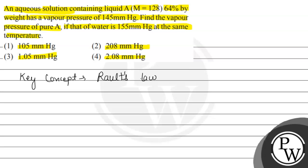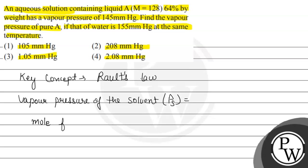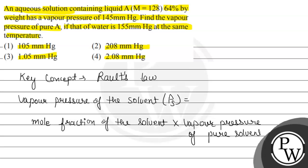Let us see what Raoult's Law states. It says that the vapor pressure of the solvent, represented by Ps, is equal to the product of the mole fraction of the solvent multiplied by the vapor pressure of the pure solvent — that is, Ps = x · P0.